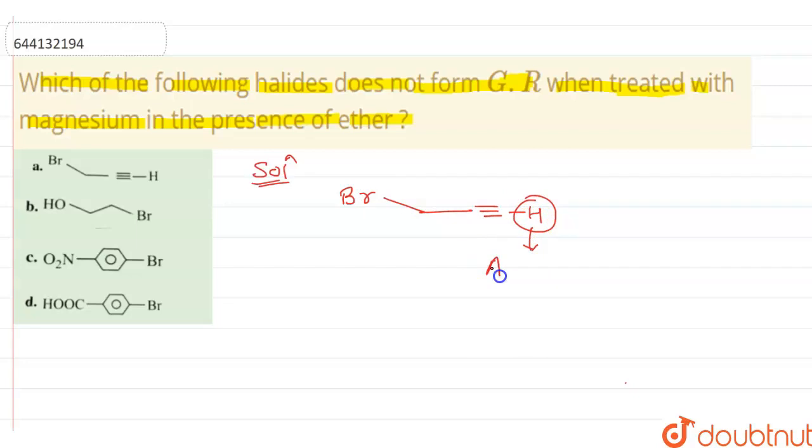So I am writing here this hydrogen is active hydrogen. And if it is active hydrogen, when we treat with magnesium ether, magnesium will react with bromine and it forms magnesium bromide.